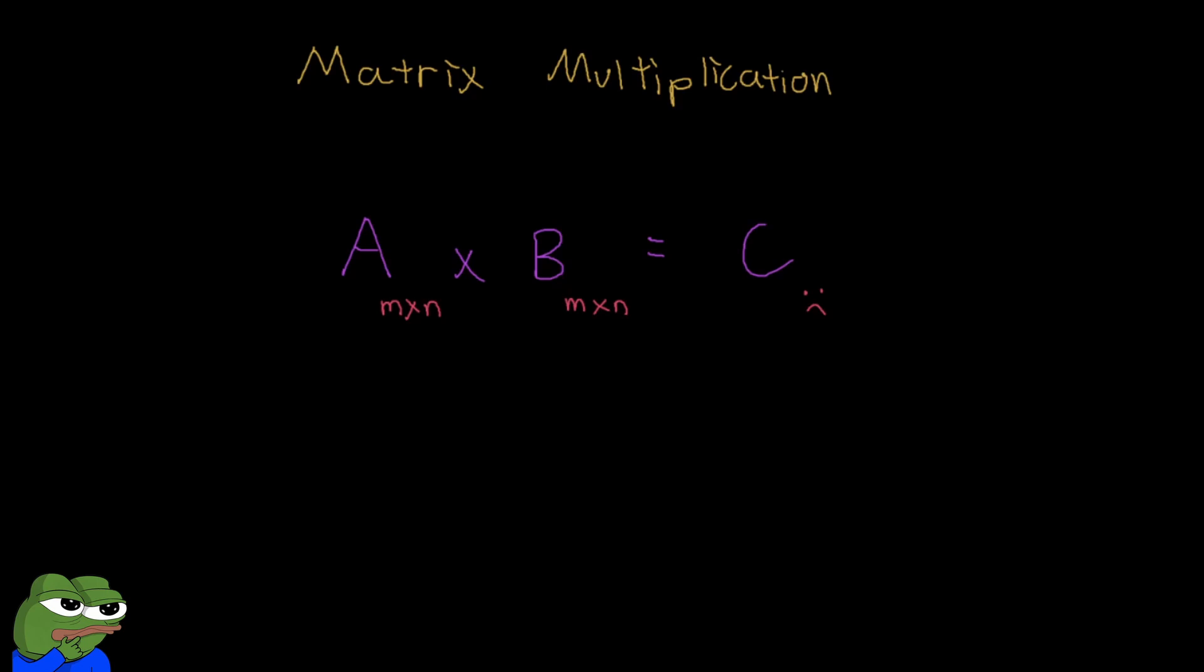Just to illustrate this a little bit further and to solidify your understanding, here we have an M by N A multiplied by an M by N B. Now, we see that the columns of A is M and the rows of B is M. They're not the same and so they can't be multiplied. That's why C here is a little bit sad.